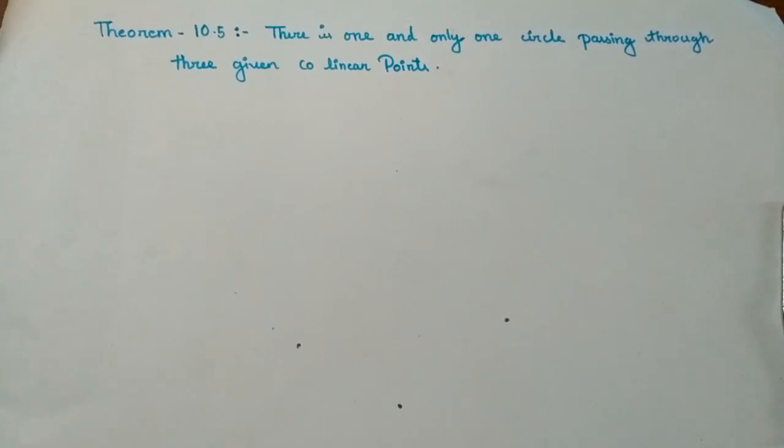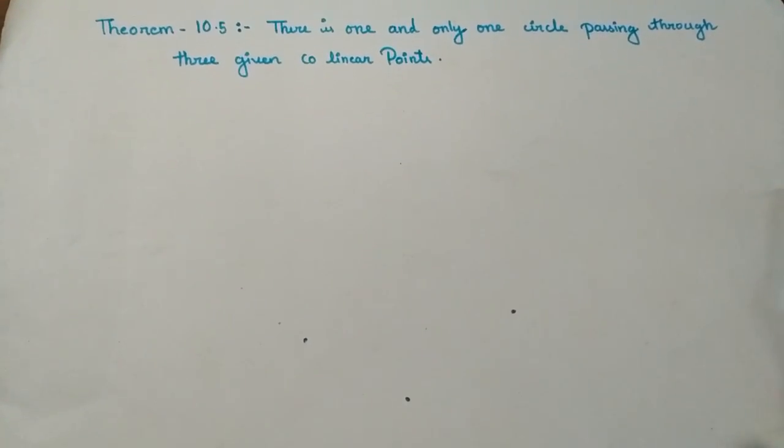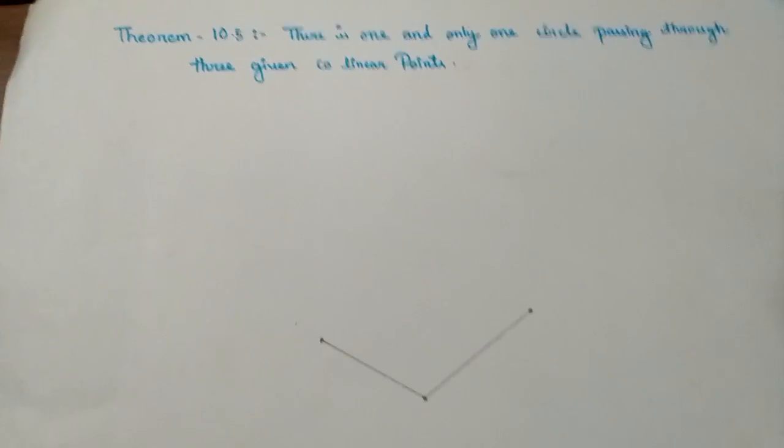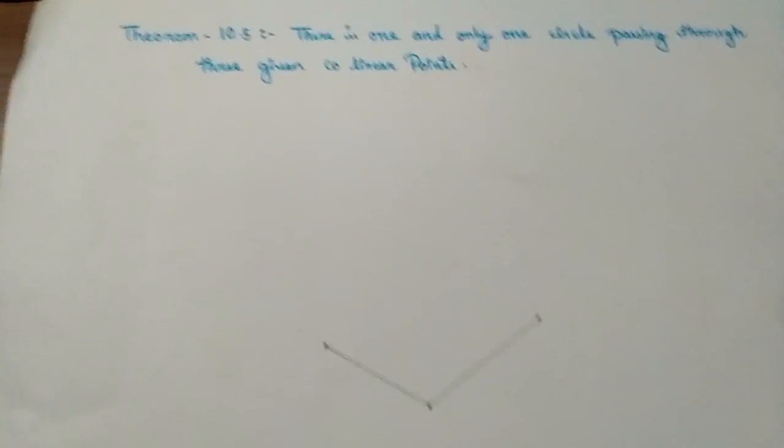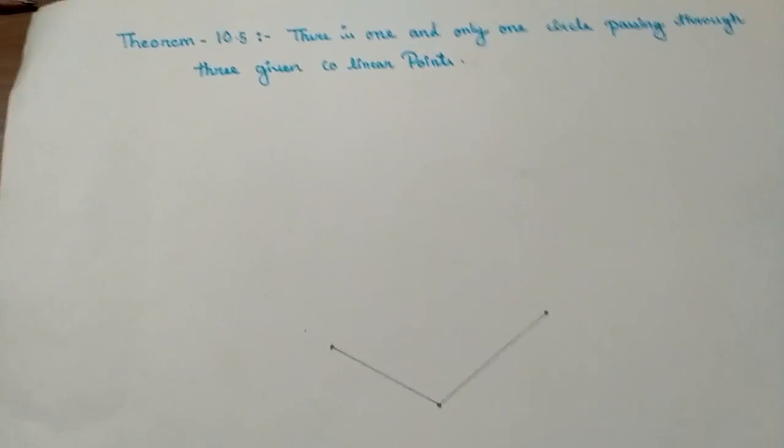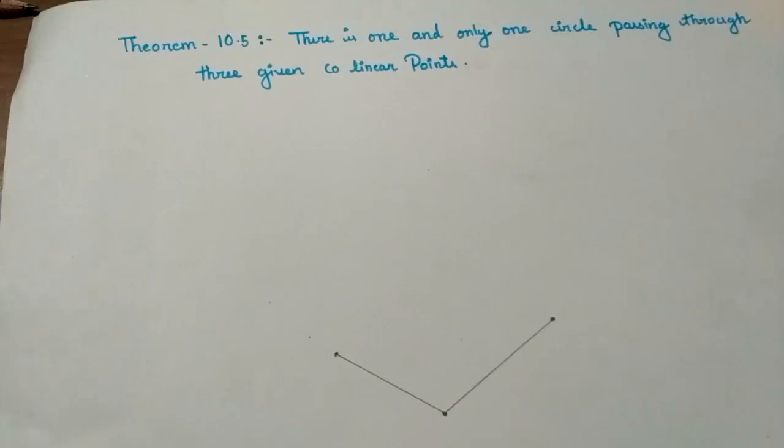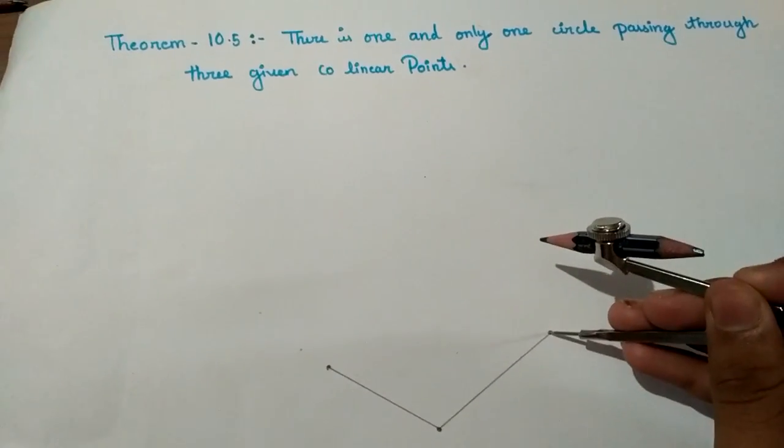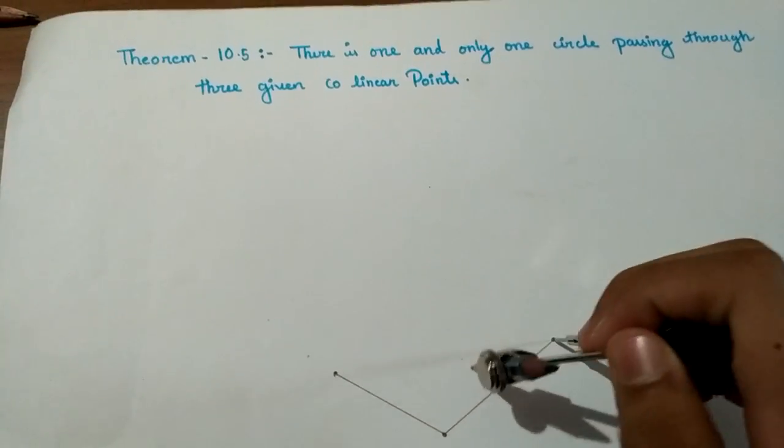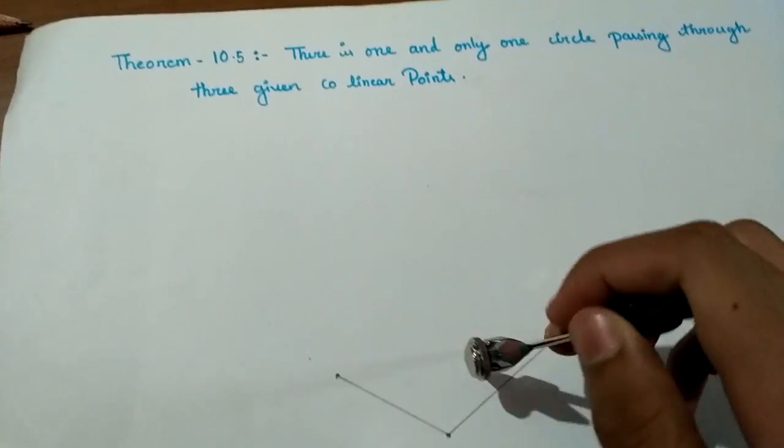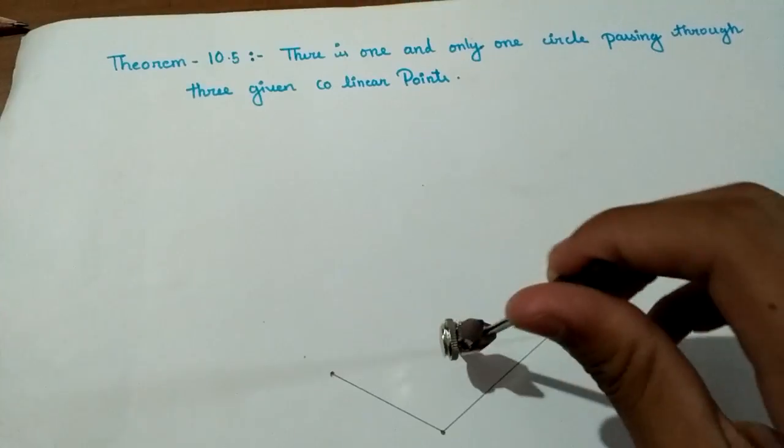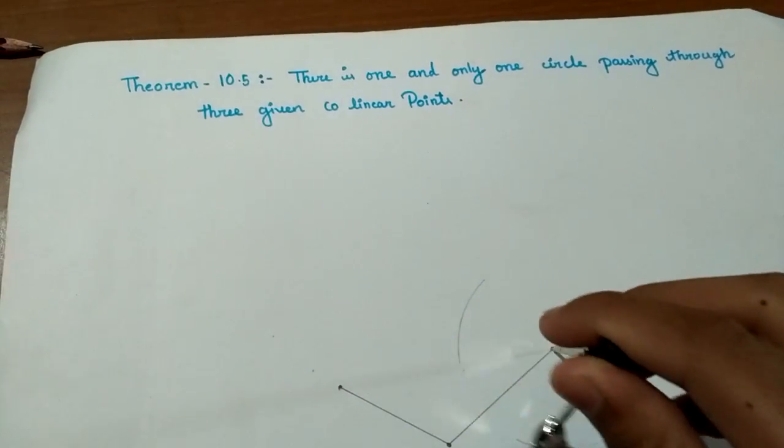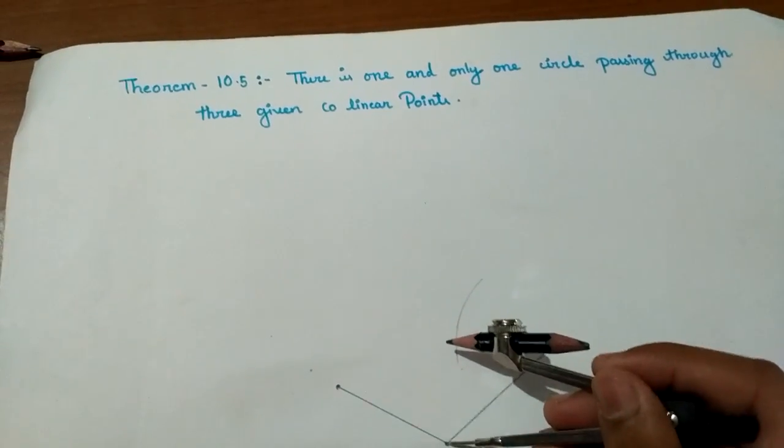Now, as you can see, I have joined these two non-collinear points. Now we take the compass and bisect these two lines. I will bisect this line by taking more than half the distance and drawing two arcs here, keeping this point as center, using the same process as you do for line bisection. Now mark these two points.